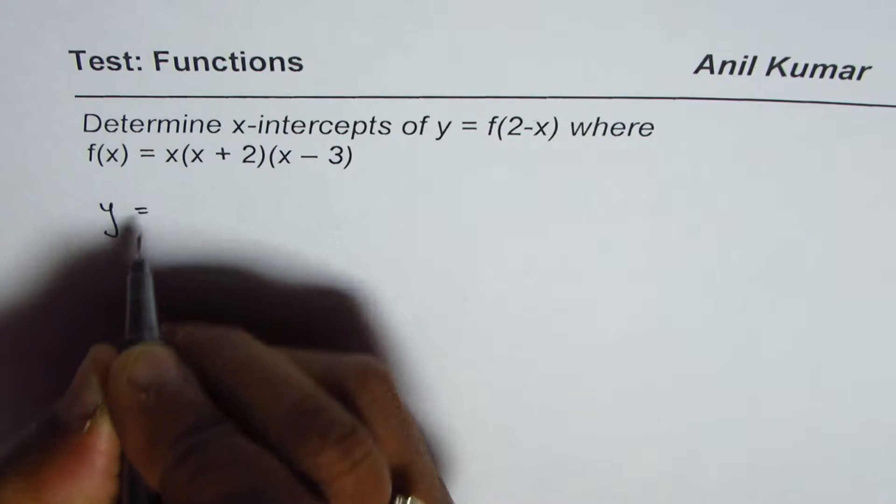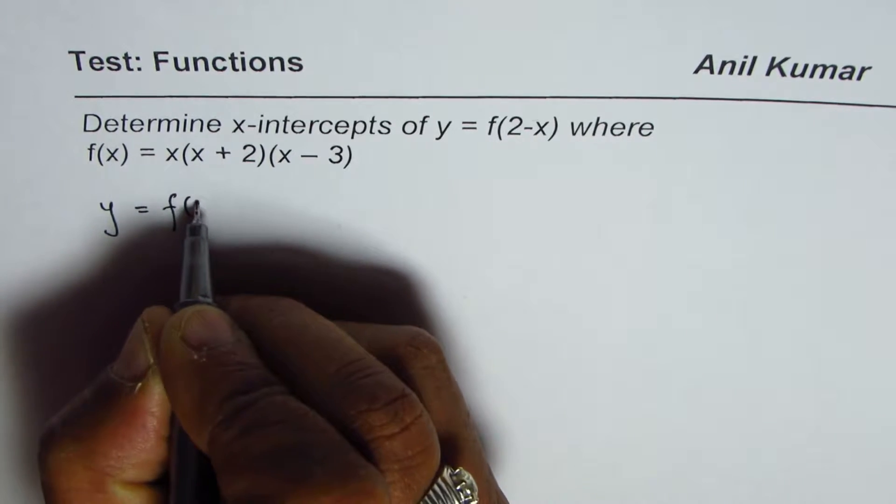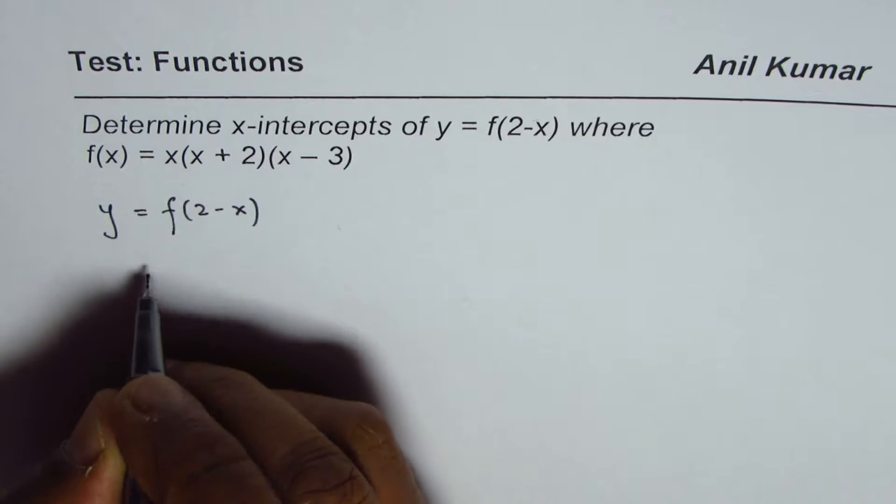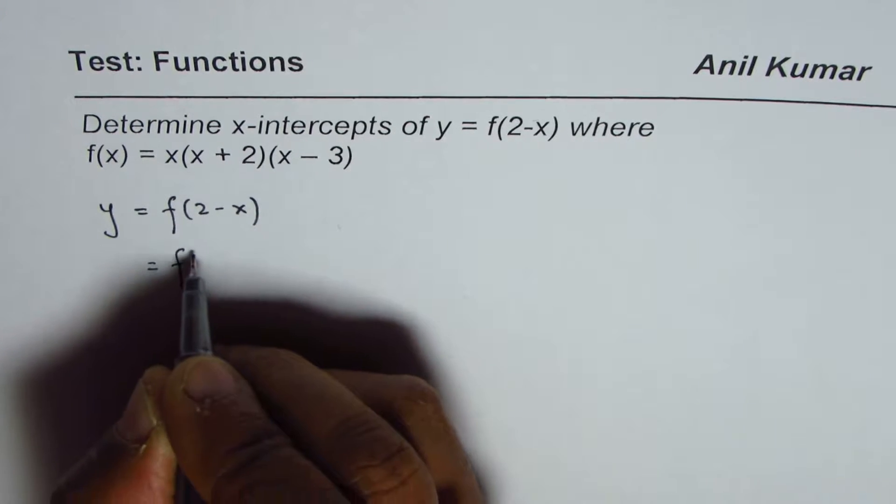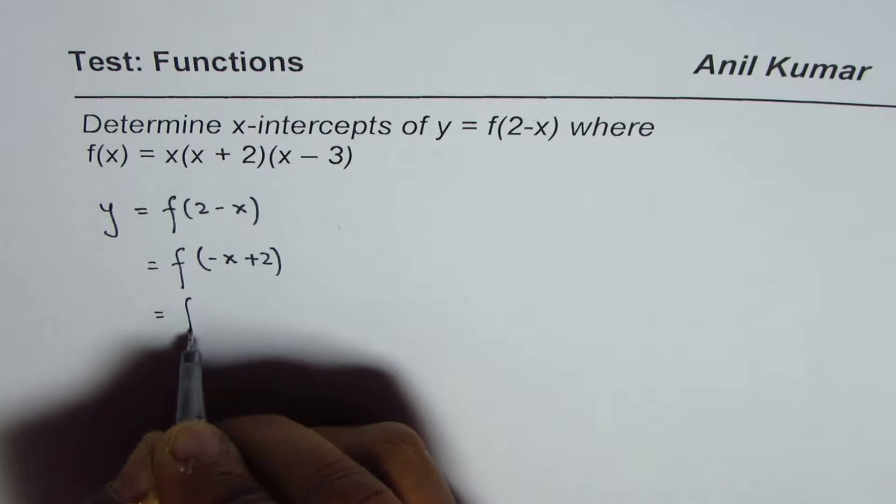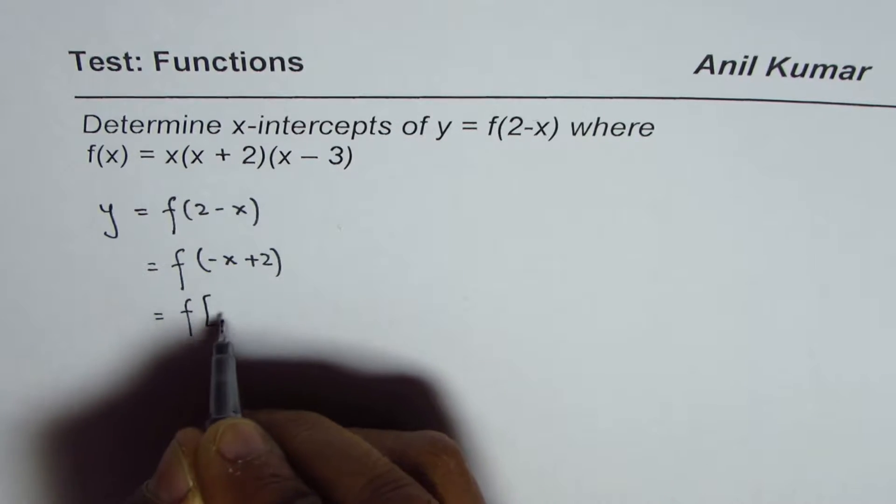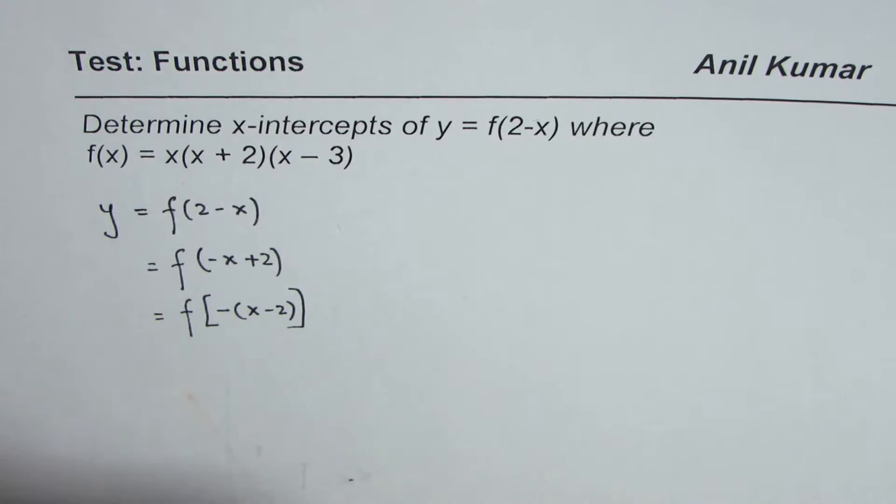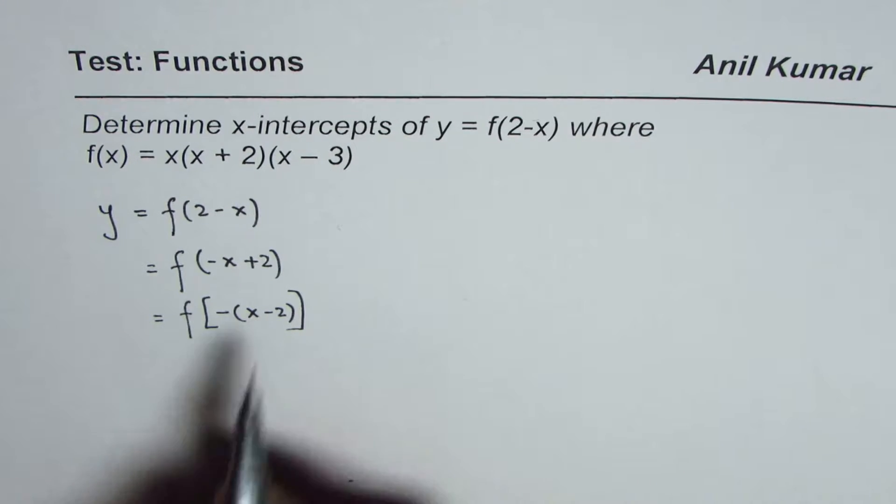So we have y equals f of 2 minus x. It is better to rearrange. So when you rearrange, you can write this as minus x plus 2, and then let's factor the coefficient of x, which is negative, and then you get within bracket minus x minus 2.